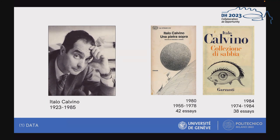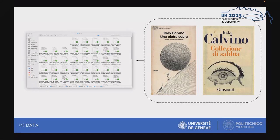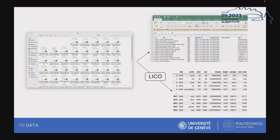First, we converted the various essays of the two collections into TXT format. Then we created a database, assigning an ID — an identifier — to each text and collecting other metadata such as year of publication. Next, we downloaded the LICO database and cleared it of all unnecessary information to obtain a list of argumentative connectives with their associated classes. Finally, we searched for the presence of connectives in the essays, recording their location.